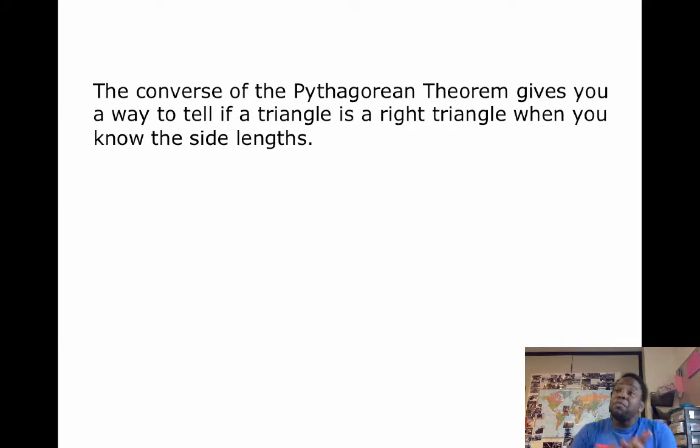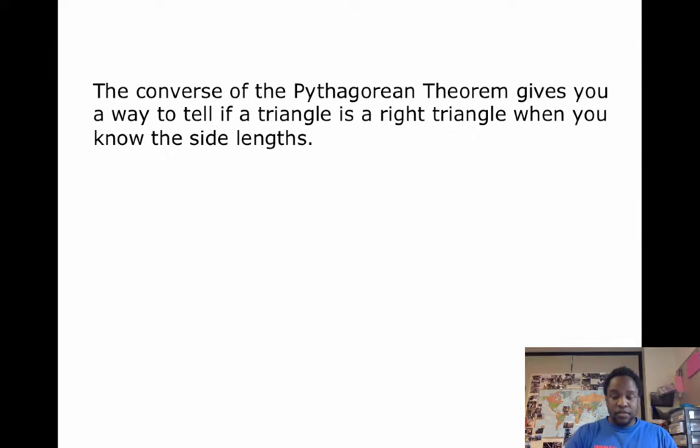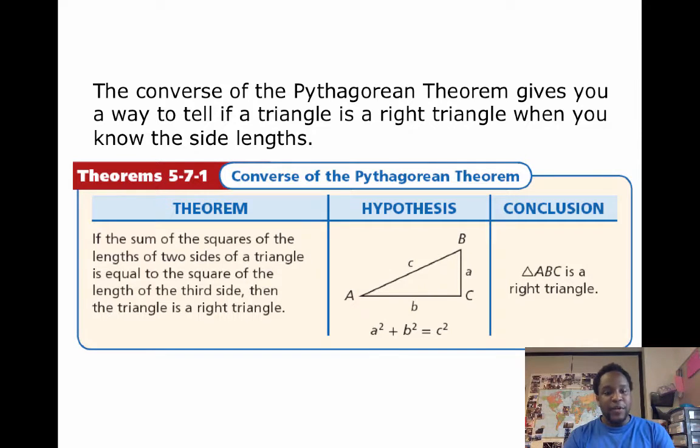So, now, let's go back to the Pythagorean theorem. So, remember the Pythagorean theorem is a squared plus b squared equals c squared. So, if we have a right triangle, we know that the side lengths of the triangle, the relationship among them is a squared plus b squared equals c squared. Well, the converse of the Pythagorean theorem gives you a way to tell if a triangle is a right triangle when you know the side lengths.